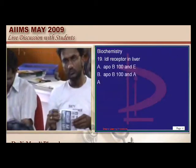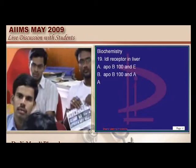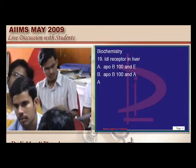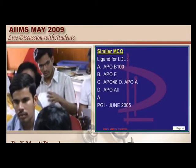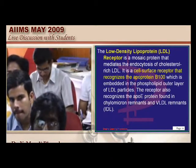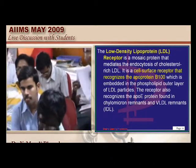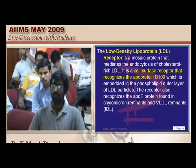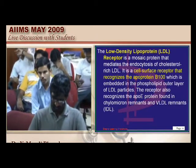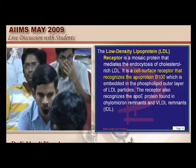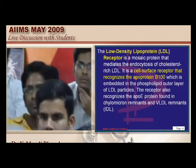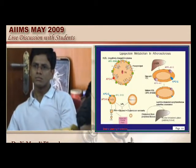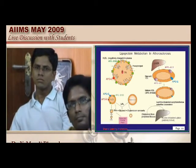Lipoproteins is another favorite topic in the top 1,400 topics. PGI 2005 June asked: what is the ligand for the LDL receptor? It is ApoB100. ApoB100 and ApoE are the two important apoproteins associated with LDL. With VLDL, ApoC and ApoB100 are associated. ApoE and ApoC are very closely related with VLDL.